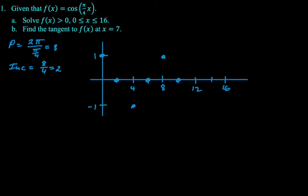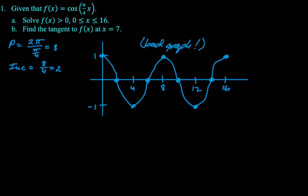So 8 and 16 because we're doing two full periods because the period is 8 and we have to go from 0 to 16. So I've got it set up and then you go maximum, intercept, minimum, intercept, and so on. This is not the best graph that you could make, but you don't need it to be the best graph. You just need it to show you where this thing is positive, which means you are above the x axis.